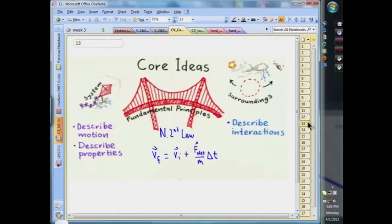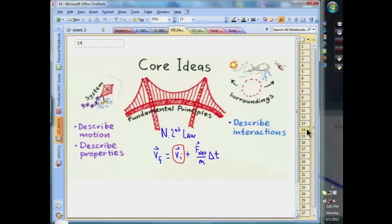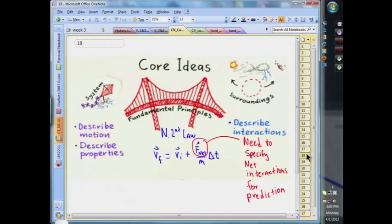Before we do that, let's remember that the model implements our fundamental principle here, Newton's second law, where beginning from initial conditions and knowing the system mass, we can look a short time into the future, and we can predict the new velocity as well as the new position. But to make that all work, we need to specify the total interactions, which in this case, we make the assumption that they are zero.